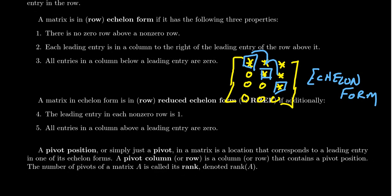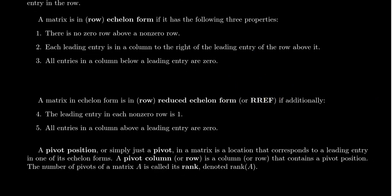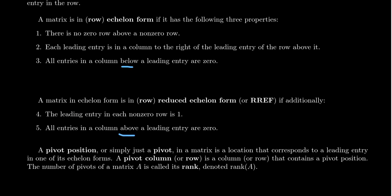We say that a matrix is in row-reduced echelon form — sometimes called RREF for short — if in addition to being in echelon form, every leading entry (every pivot position) is a 1, and all entries above a leading entry are also 0. So to be in echelon form, everything below a pivot must be 0. To be in row-reduced echelon form, everything above and below the pivots must be 0, and the leading entries must be 1. Every matrix in RREF is in row echelon form, but the converse is not necessarily true.